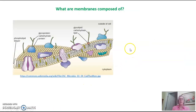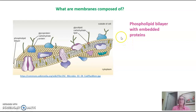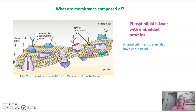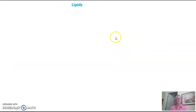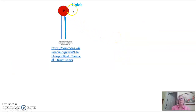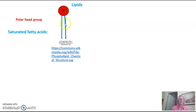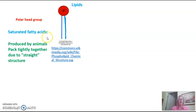So what are membranes composed of? Membranes are composed of a phospholipid bilayer with embedded proteins. Animal cell membranes also have cholesterol, and I'll talk more about the function of this later in this video. Our phospholipids have a polar head group composed of glycerol and phosphate, and then they also have fatty acid tails. The tails drawn here are saturated fatty acids, and you know this because they are drawn in a straight line.